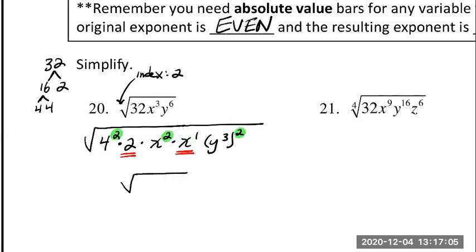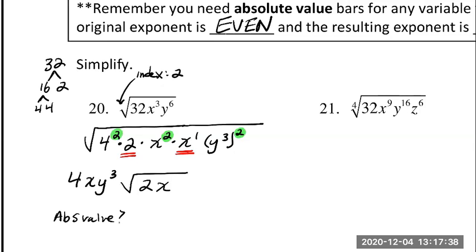So when we simplify this, let's see what's going to stay under the radical. The 2 is going to stay under the radical and the x to the first is going to stay under the radical, so we start with 2 and x under the radical. Now all those squares highlighted in green are going to simplify: the square root of 4 squared is 4, the square root of x squared is x, and the square root of y cubed squared is y cubed. Now it's very tempting to move on, but we have to ask — do we need absolute value bars?